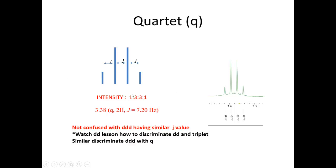The intensity of the signal is 1:3:3:1. One line is small and three times higher, three times higher, and one. The difference of any two lines is the J value. You can pick any two lines to get the J value. Here we report 3.38 quartet, two protons, 7.2 Hz.